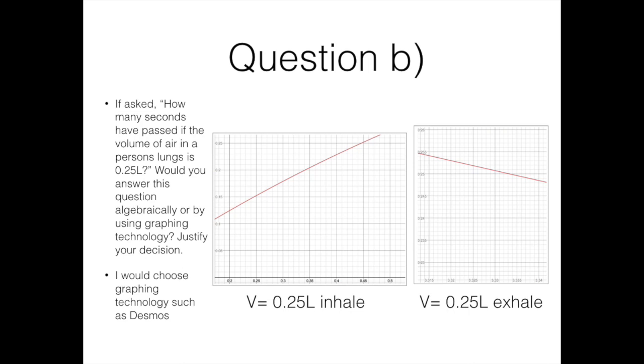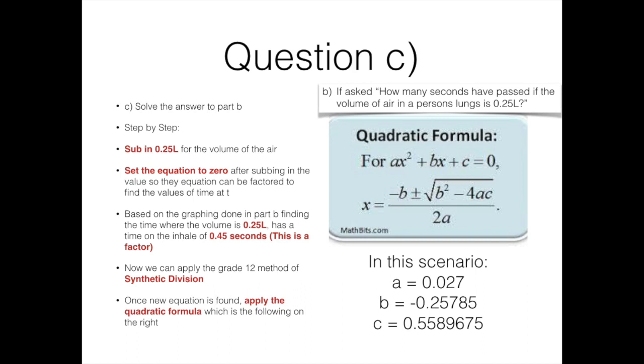To the left, there is a step-by-step process to get the full solution to question C, finding the time at t to where the volume in a person's lungs is 0.25 liters. Take a second to read them over. When analyzing this, remember to take your restrictions into consideration, as the time must be greater than 0 but less than 5 seconds. Also, we need to note that we need to know the quadratic formula in order to complete the final step of factoring to solve and isolate the value of t at 0.25 liters.